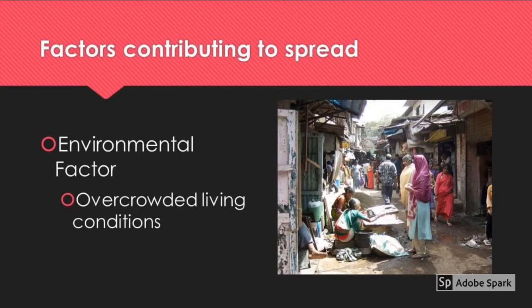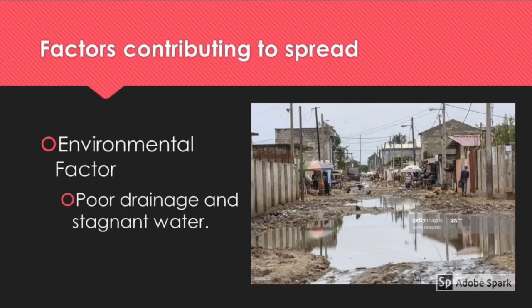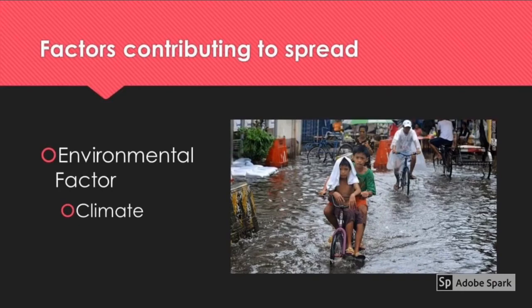Overcrowding in slums is a serious environmental factor because when any disease breaks out — whether airborne, insect-borne, or droplet-borne — the spread is very fast. Slums also typically have very bad drainage: along roads, clogged drains, and roof areas can all accumulate stagnant water. As anyone familiar with Singapore's dengue campaigns knows, mosquitoes can breed in a pool of water the size of a 20-cent coin — so large stagnant pools in slums are effectively mega breeding grounds.